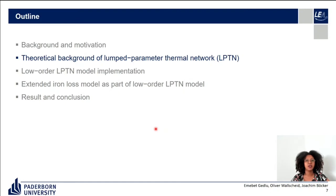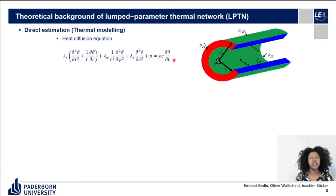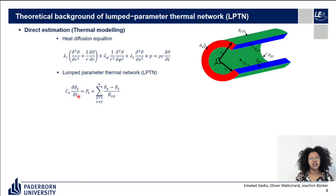Next, we will see the theoretical background of LPTN. In direct estimation or thermal modeling, LPTN is about solving the heat diffusion equation of a particular volume unit under its geometrical constraints. This gives us an equation which replaces the second-derivative terms with a new term called thermal resistance. Generally, for parts of an electric machine, LPTN states that the time change of temperature is either caused by the heat power generated inside the volume unit or by the heat power transferred from other parts of the machine in contact with that volume unit.